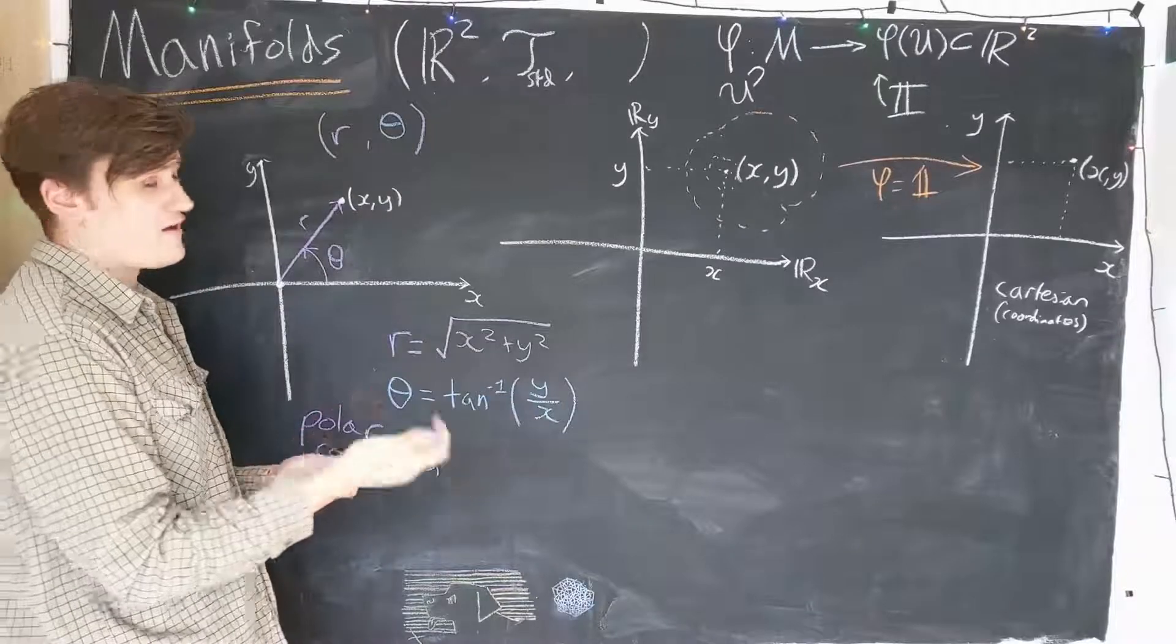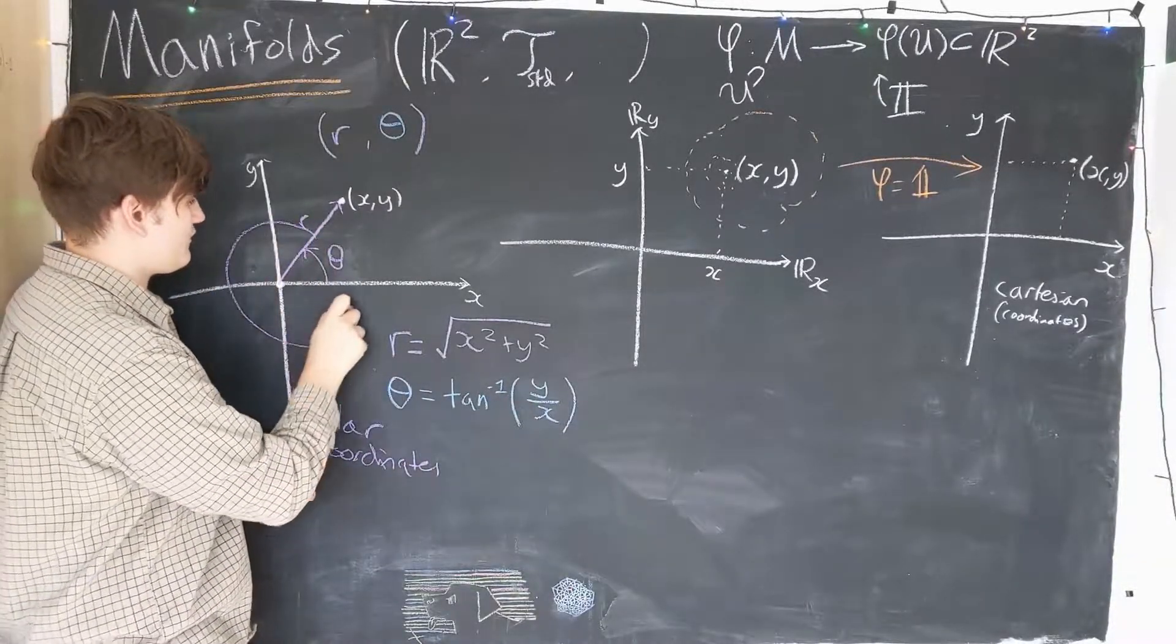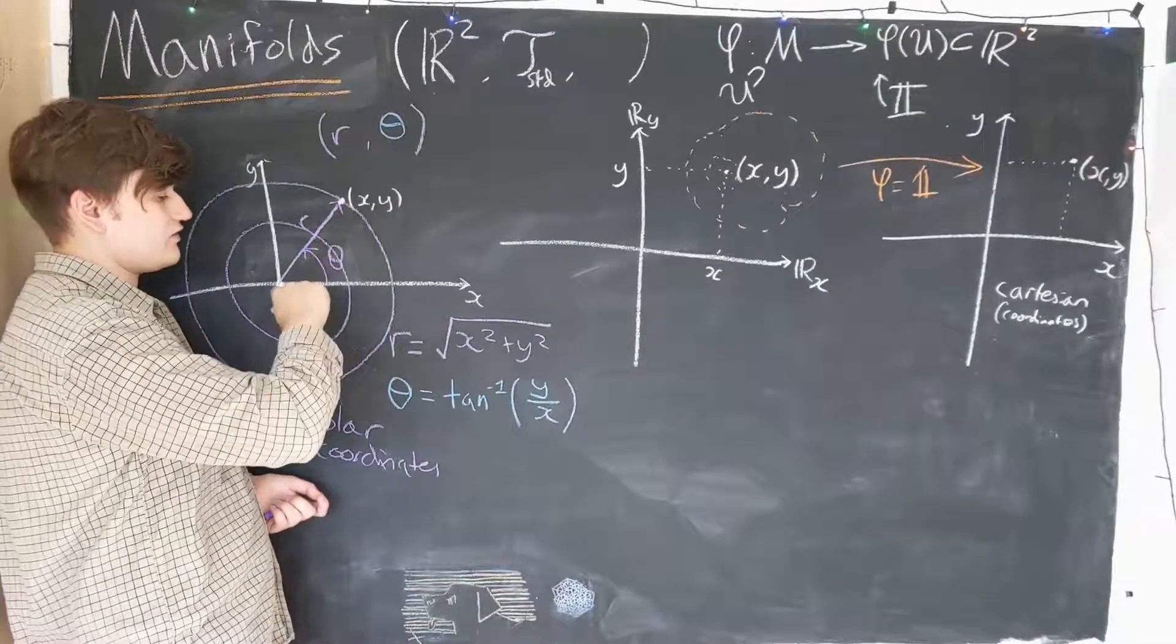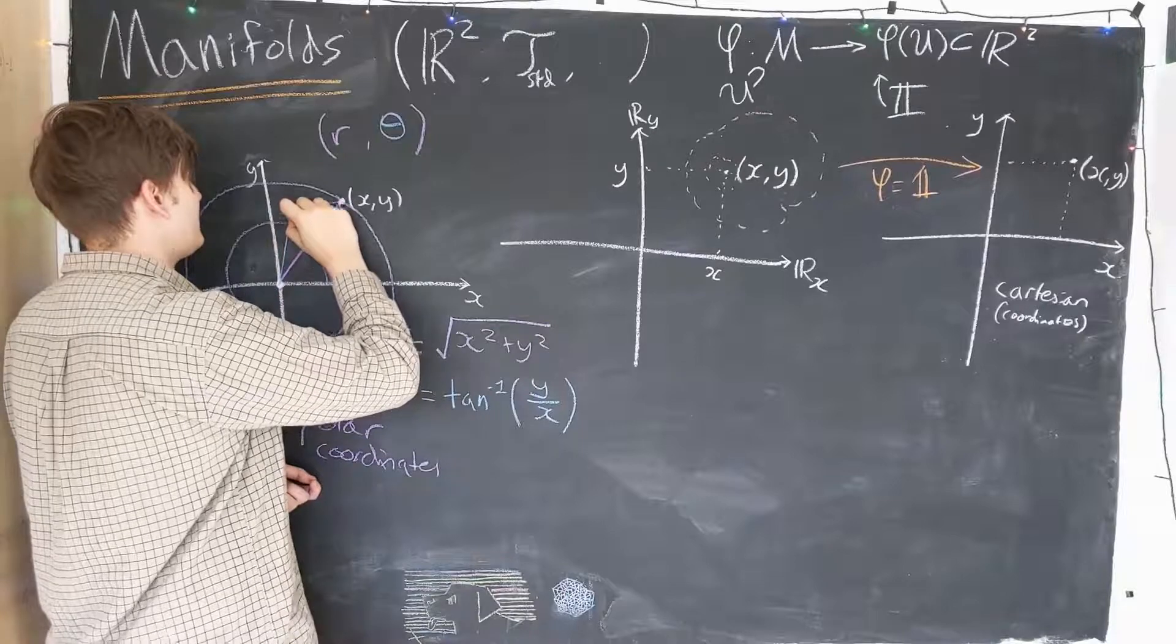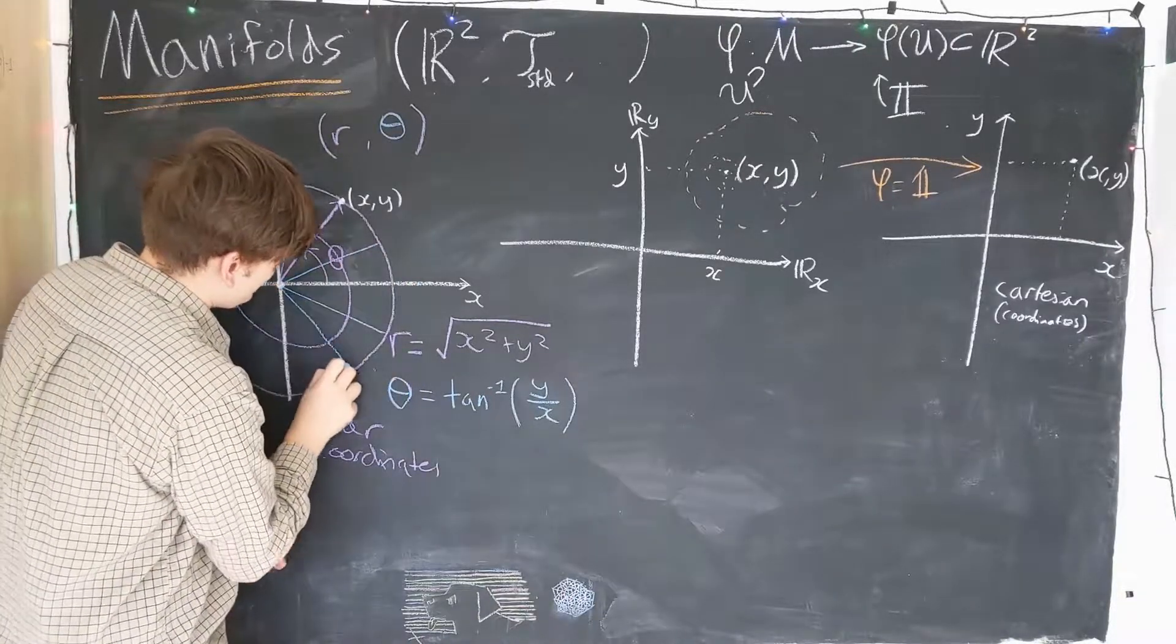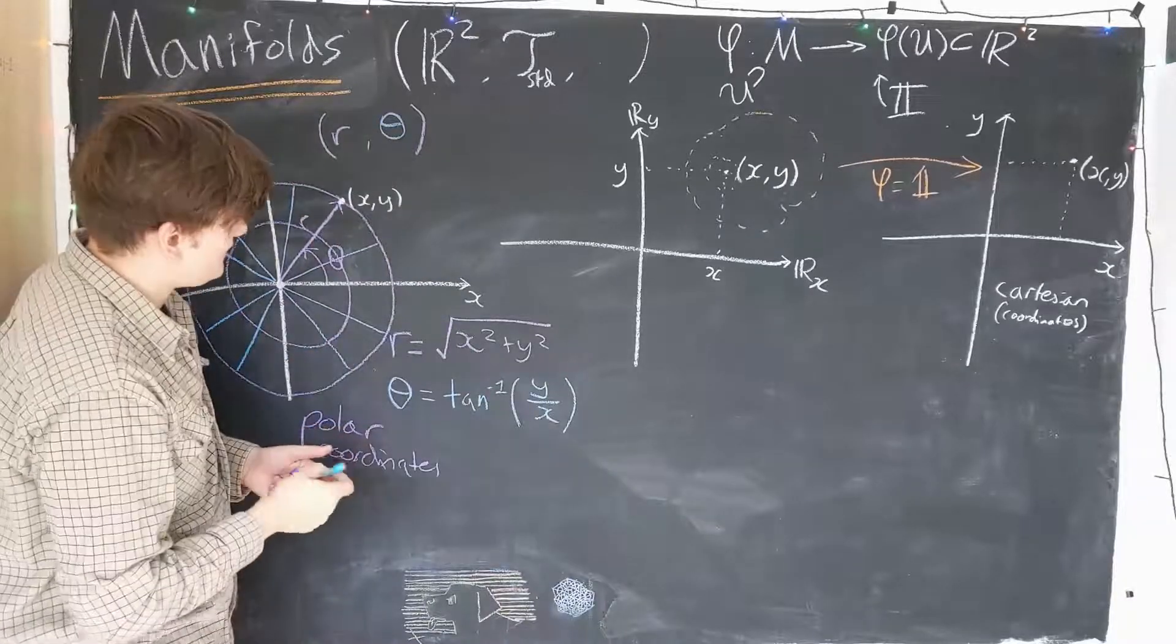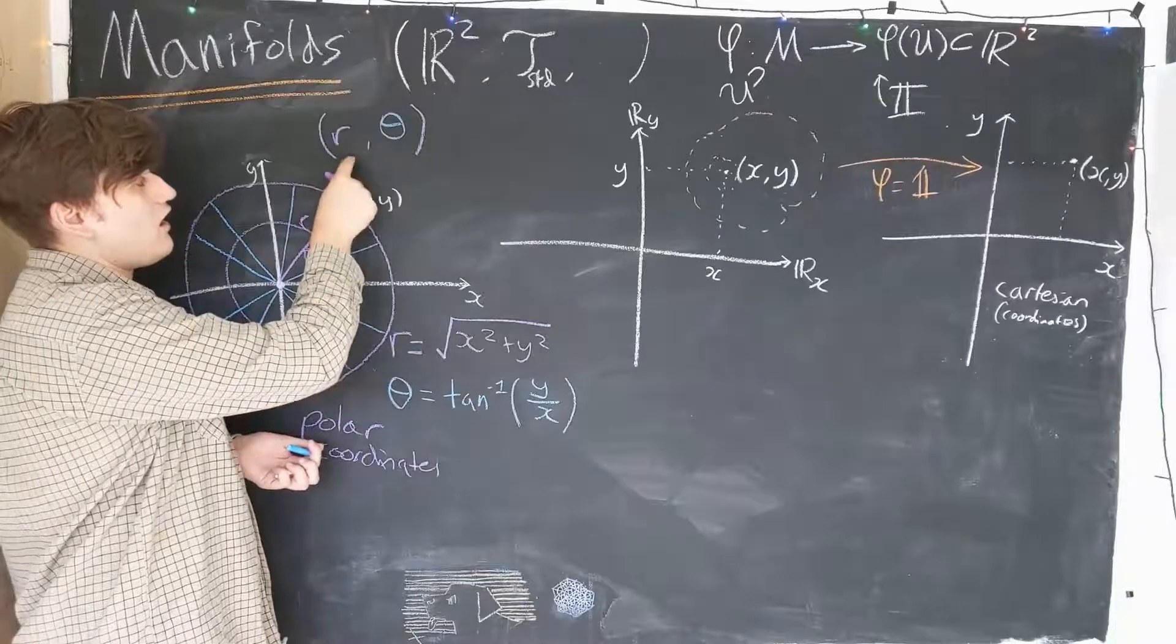So what polar coordinates actually do is they effectively create these rings in the space. So these are, if you like, rings of constant radius. And then we have all the possible kind of theta values that you could create. These radii are now able to span the entire space, but rather than giving you the x, y coordinates, you are given the R theta coordinates.